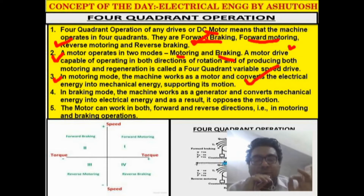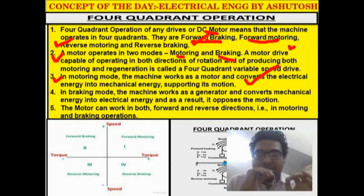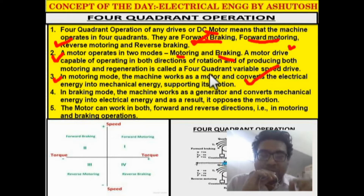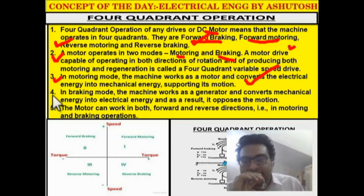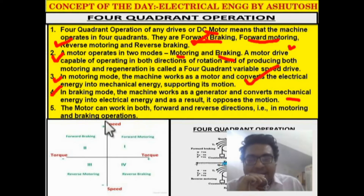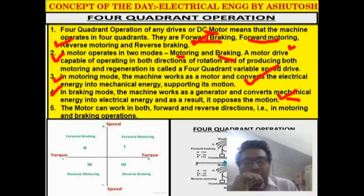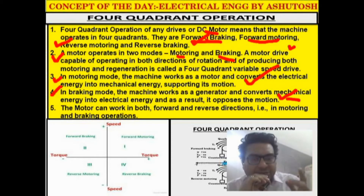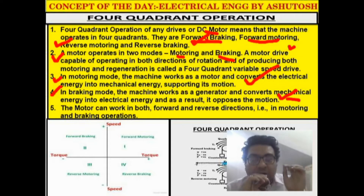This is a very important point: the torque of the motor and the speed of the motor during motoring mode will be in the same direction. In braking mode or generating mode, these will be opposite. In braking mode, the machine works as a generator and converts mechanical energy into electrical energy, opposing the motion.